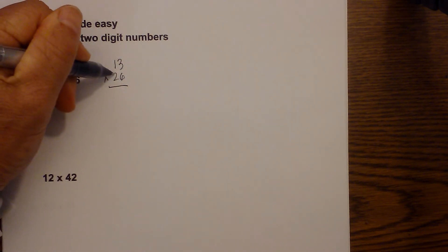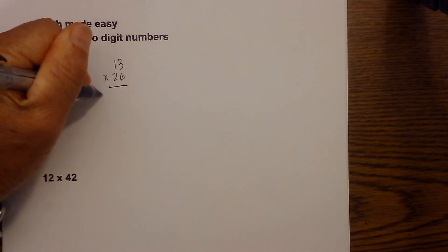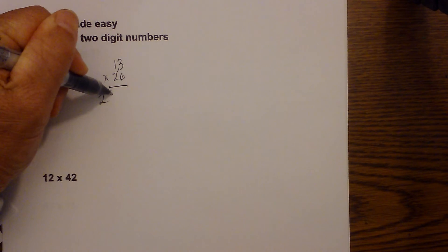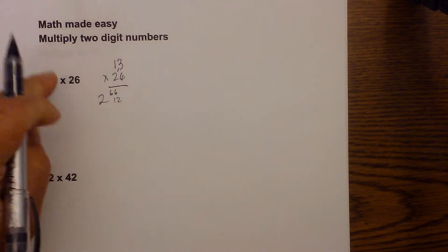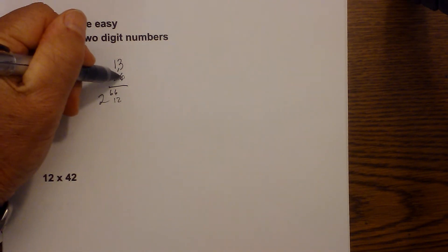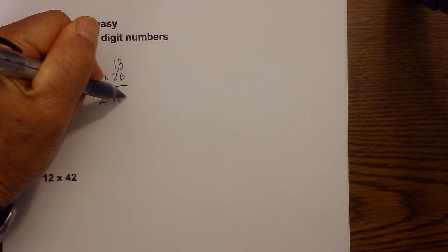For the first digit you just multiply 2 times 1 which is 2. For the second digit you criss cross and you go 3 times 2 which is 6, 6 times 1 which is 6. So that becomes a 12. I'm going to write this here and we'll get back to this in just a moment. And then 6 times 3, the last one is 18.